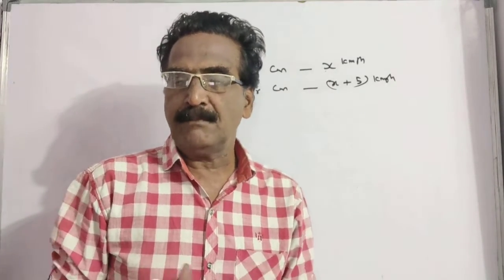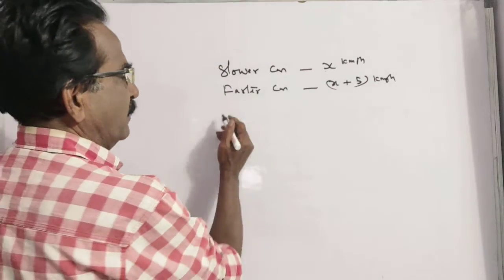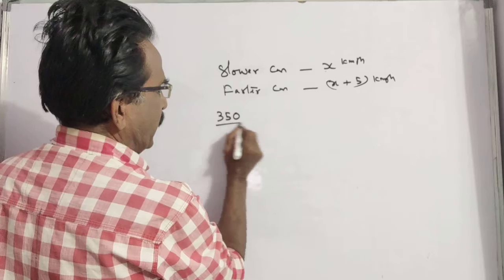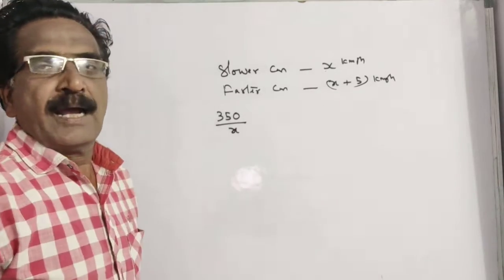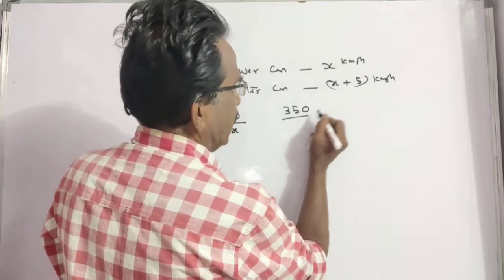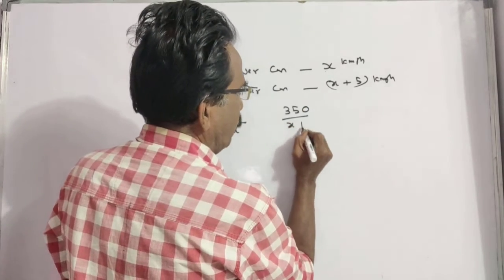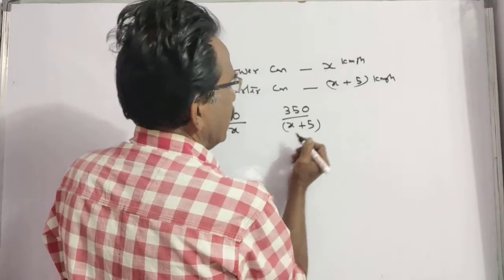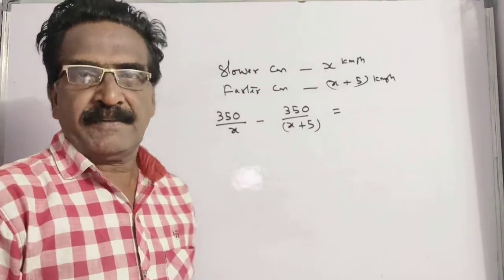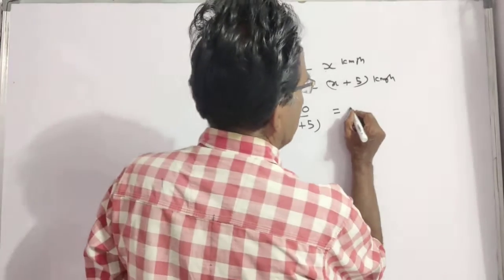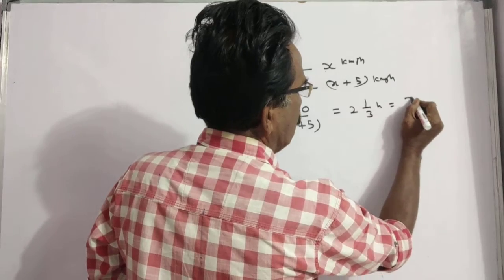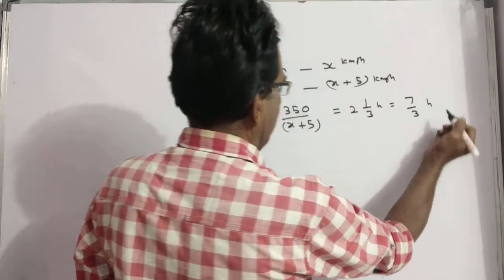Now, the time taken to travel 350 kilometers with x kmh speed and the time taken to travel the same 350 kilometers with x plus 5 kmh is given 2 hours 20 minutes. 2 hours 20 minutes means 2 and 1 by 3 hour, that is equal to 7 by 3 hour.